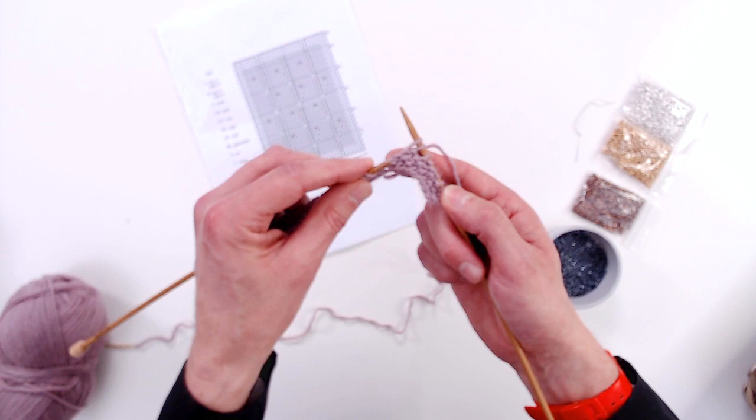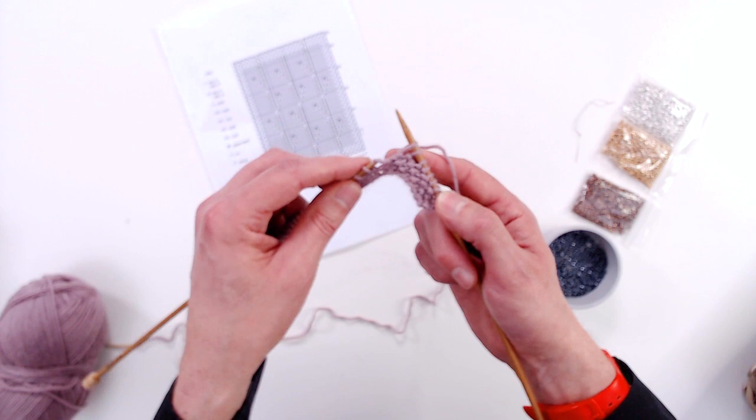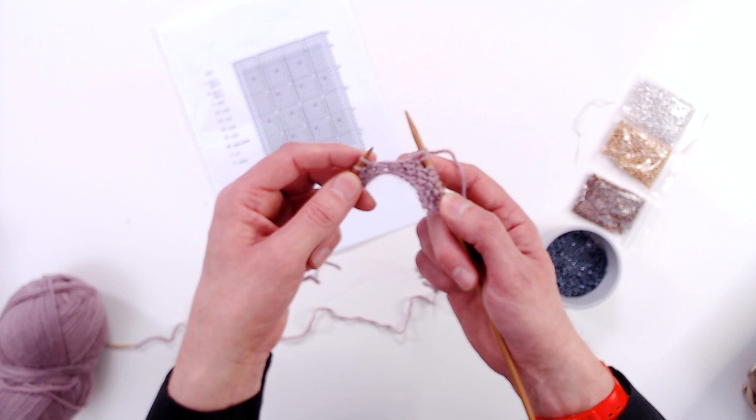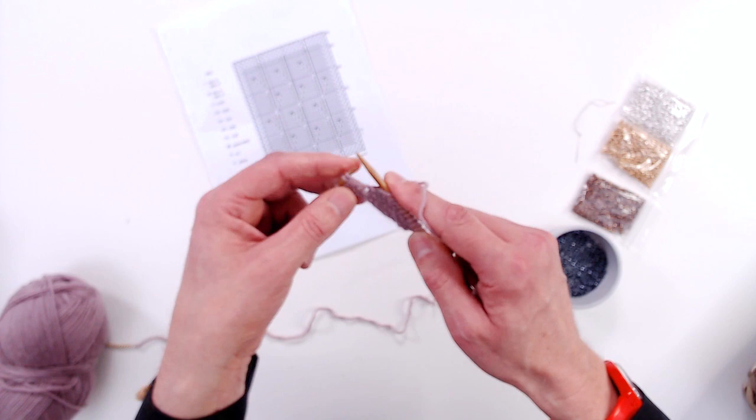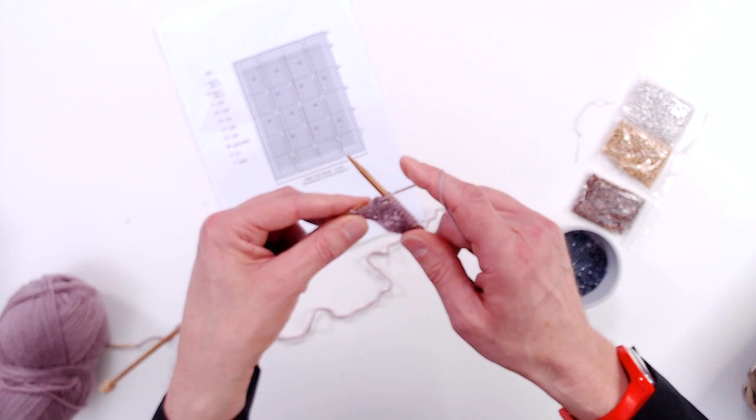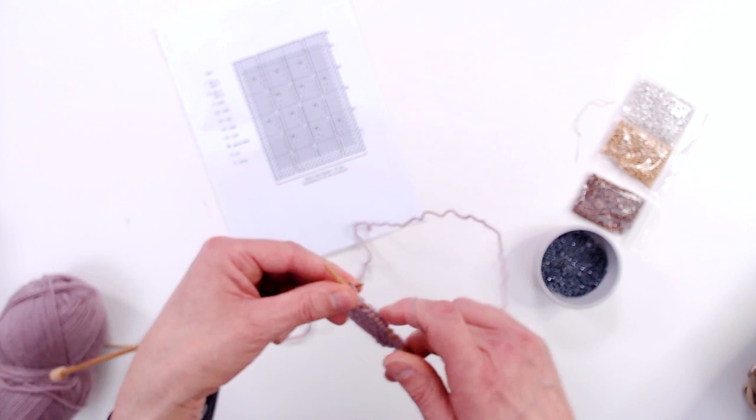up with the tip of my left hand needle, I just need to pick up the running thread between these two stitches and I pick it up from the front like that. And then to finish, to work the make one, I just knit into the back of that thread so I've made an extra stitch.